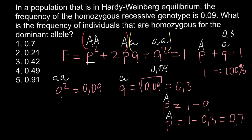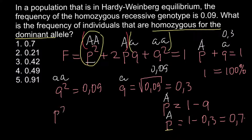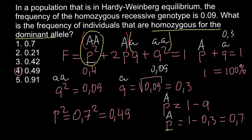Our question asks for the frequency of individuals that are homozygous for the dominant allele — the homozygous dominant genotype. Since we know P, we can find P squared. P squared equals 0.7 squared, and the answer is 0.49. This is answer number 4, and it is the frequency of the homozygous dominant genotype.